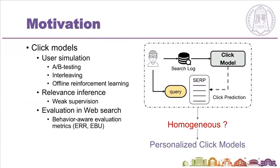Click models are widely used for user simulation, relevance inference, and evaluation in web search. Most existing click models implicitly assume that users' relevance judgment and behavior patterns are homogeneous. However, previous studies have shown that different users interact with search engines in rather different ways. Therefore, it is necessary for us to reconsider the problem of constructing personalized click models, which may be used to predict users' personalized behavior. However, there are some major challenges.